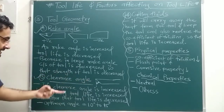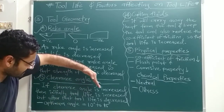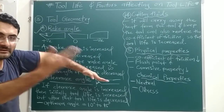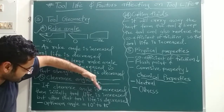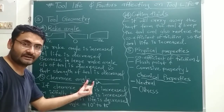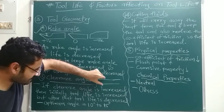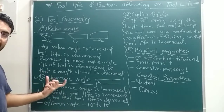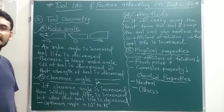The clearance angle is the angle between the vertical axis and the flank of the tool. If you increase the clearance angle, initially tool life increases, but after some point tool life decreases. Initially, increasing the clearance angle reduces friction between tool and workpiece, so less heat is produced, the tool does not become brittle, and tool life increases. However, beyond a certain point, increasing the clearance angle decreases the cross-section of the cutting tool, reducing its strength, causing it to break and decreasing tool life.